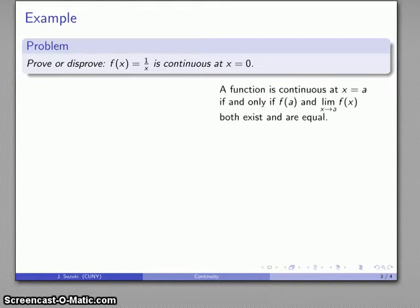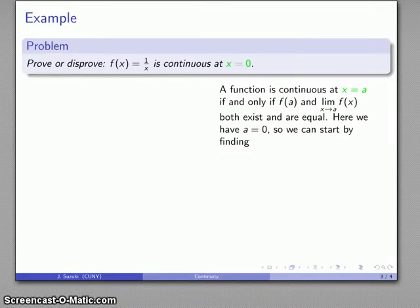In order to prove continuity we need to make sure that the function value at a point and the limit as x approaches that point are both existent, they both exist, and they are equal. Generally speaking it's easier to start by finding the function value so we might try and find the function value at x equal to a. Our point of interest x equals 0, our definition x equal to a, so that says that 0 and a are the same thing, so that a is equal to 0. So we can start by finding f of 0.